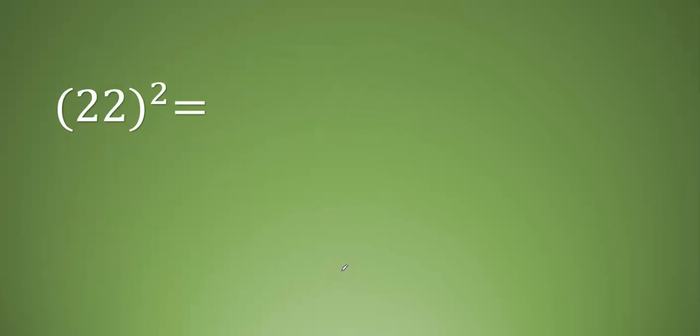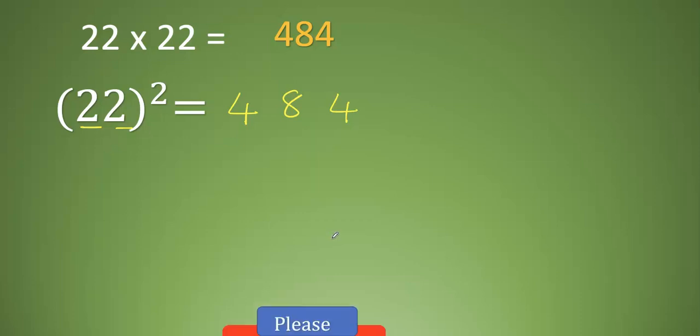Let's see one more: 22 the whole square. Square of 2 is 4, multiply 2 into 2 is 4, 4 into 2 is 8, then square of 2 is 4. How easy! So 22 into 22 is 484. I hope it's clear. Please subscribe my channel.